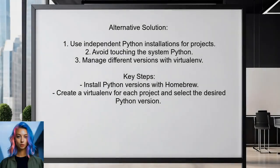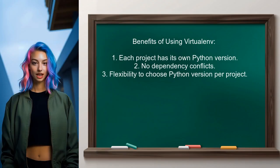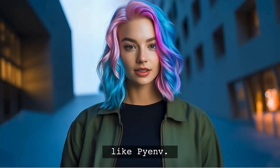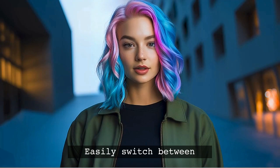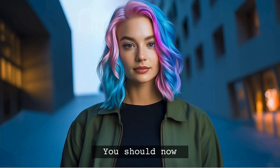Another approach suggests avoiding changes to the system Python by using independent Python installations for each project, so you can manage different Python versions without conflicts. By using virtualenv, each project can have its own Python version, ensuring compatibility with libraries. This method allows you to work with both Python 2.7 and Python 3 without interference, and easily switch between versions without uninstalling and reinstalling.